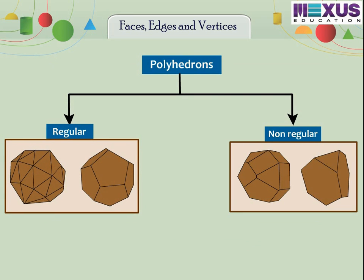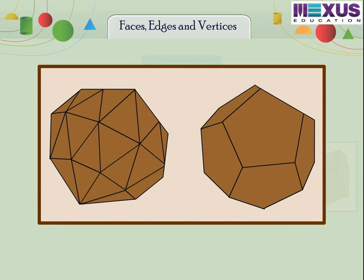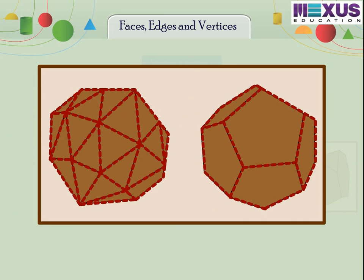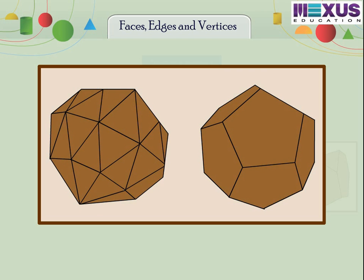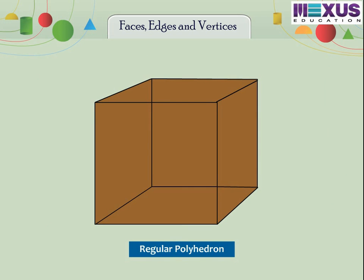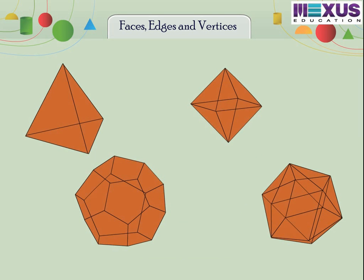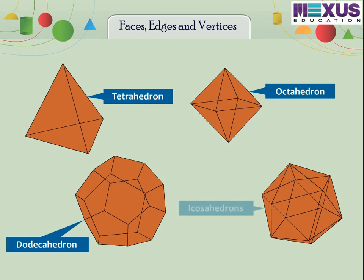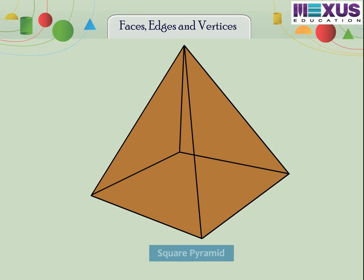Now let us see regular polyhedrons and non-regular polyhedrons. The polyhedron whose faces are made up of regular polygons and are congruent and the same number of faces meet at each vertex is said to be regular polyhedrons. For example, cube is a regular polyhedron. Its faces are congruent regular polygons. Vertices are formed by the same number of faces. More examples of convex polyhedrons are tetrahedron, octahedron, dodecahedron and icosahedrons are regular polyhedrons. Now look at this square pyramid. This polyhedron is not regular. All the sides are congruent but its vertices are not formed by the same number of faces. One vertex is formed by four edges and other vertices are formed by three edges.